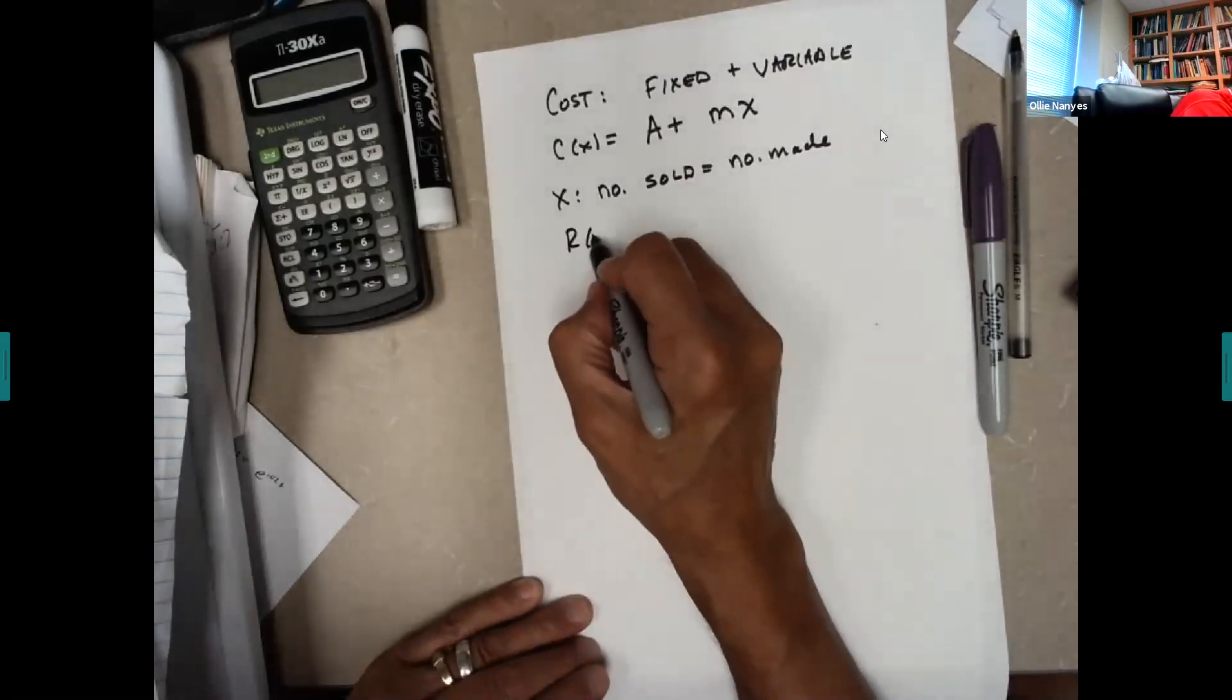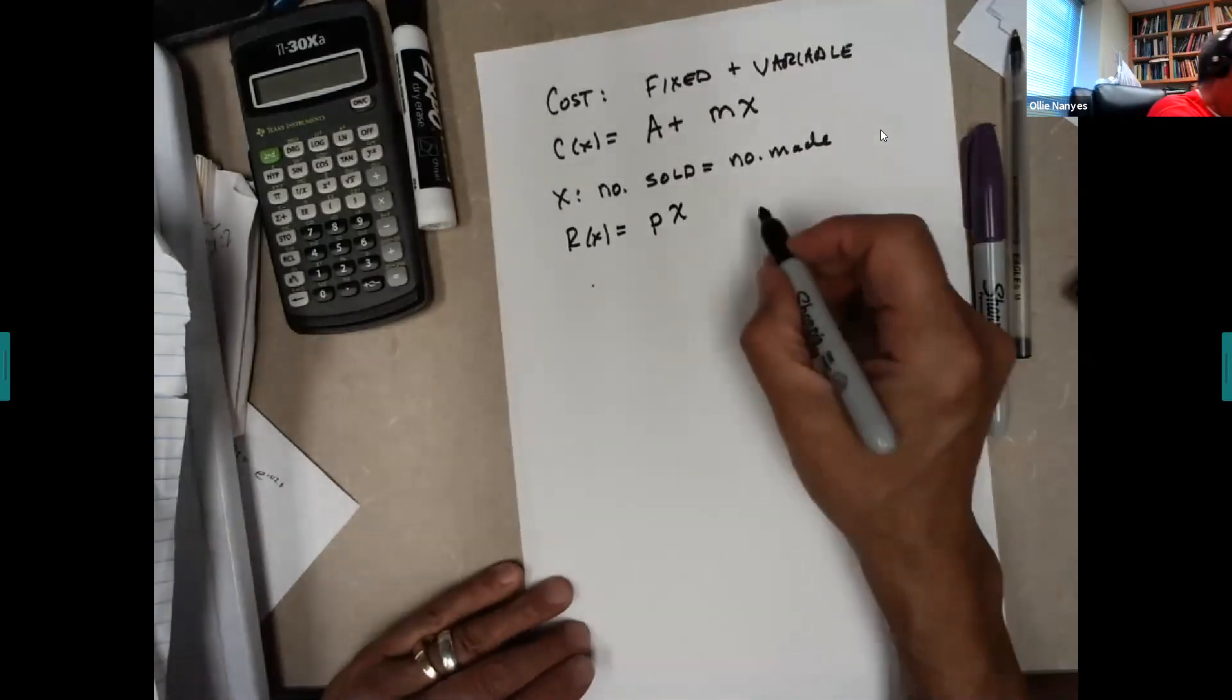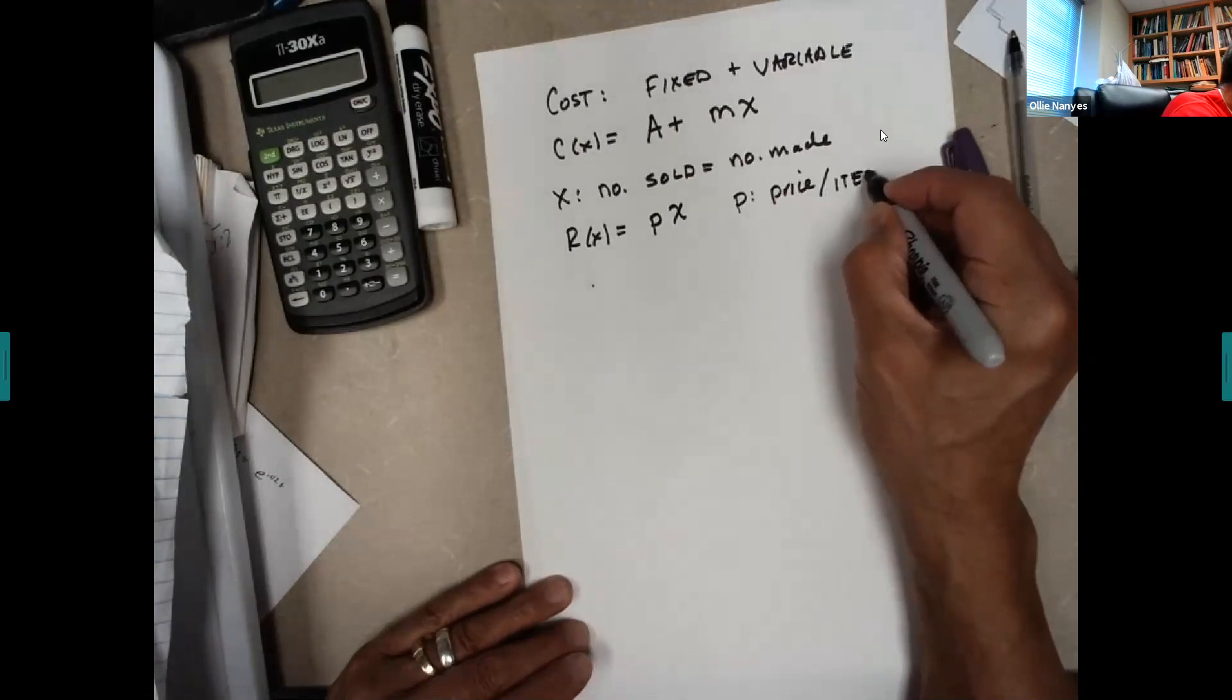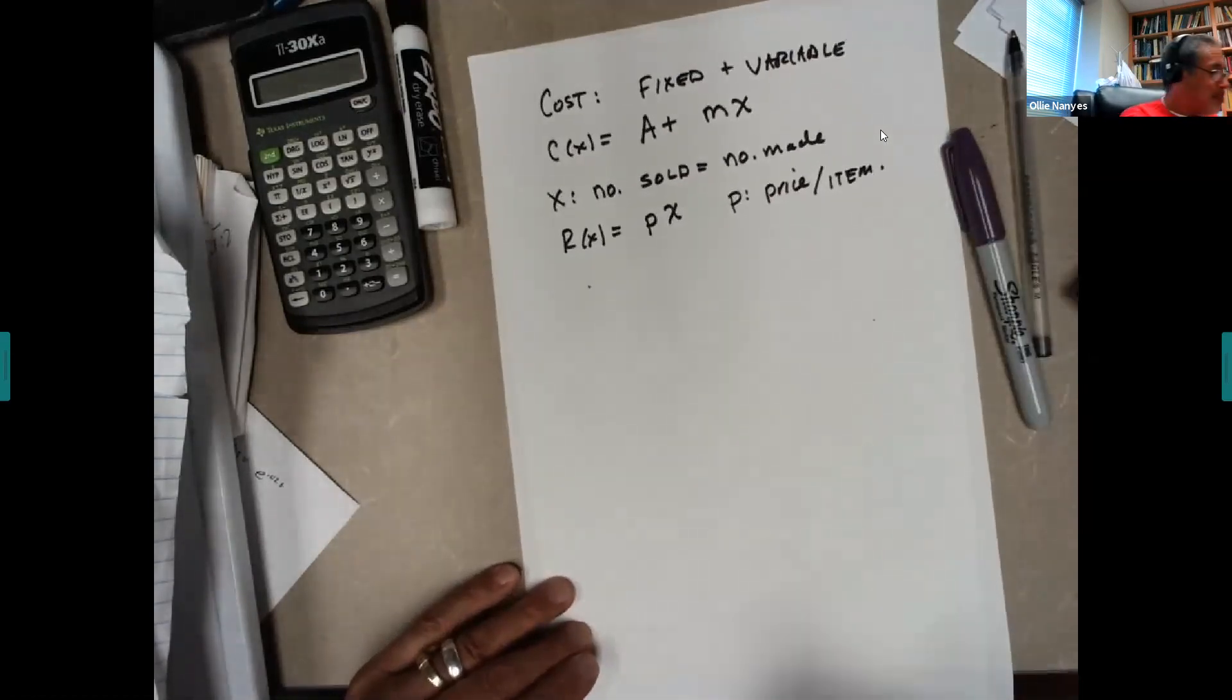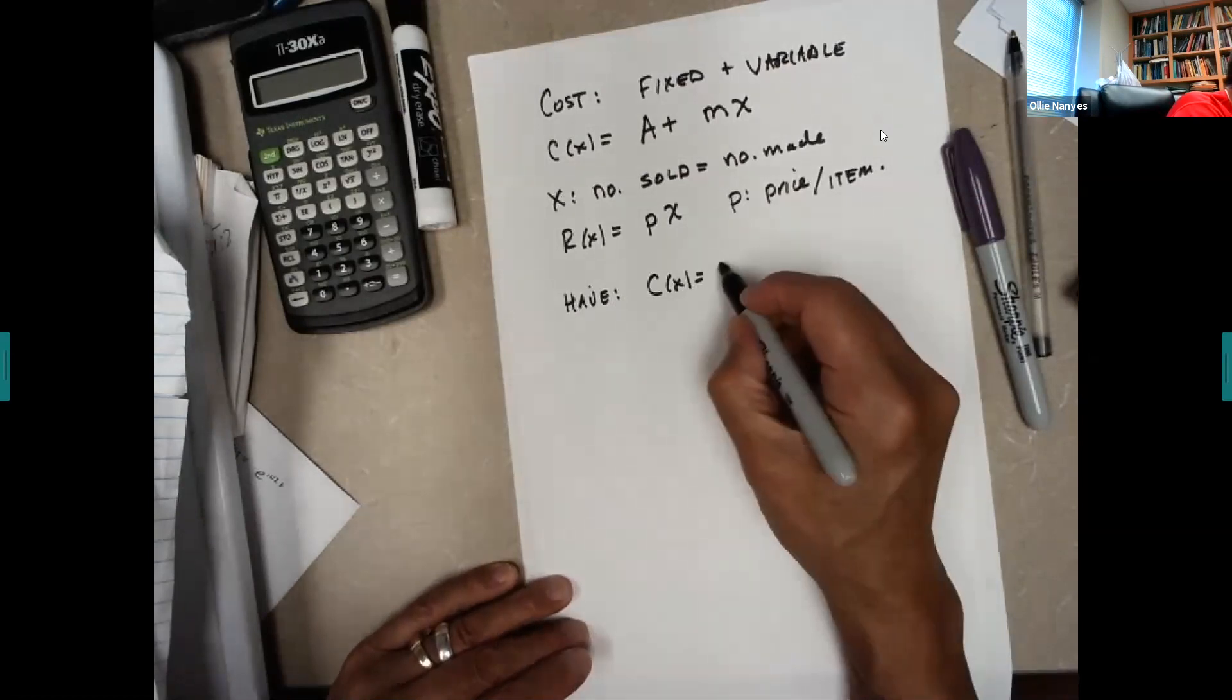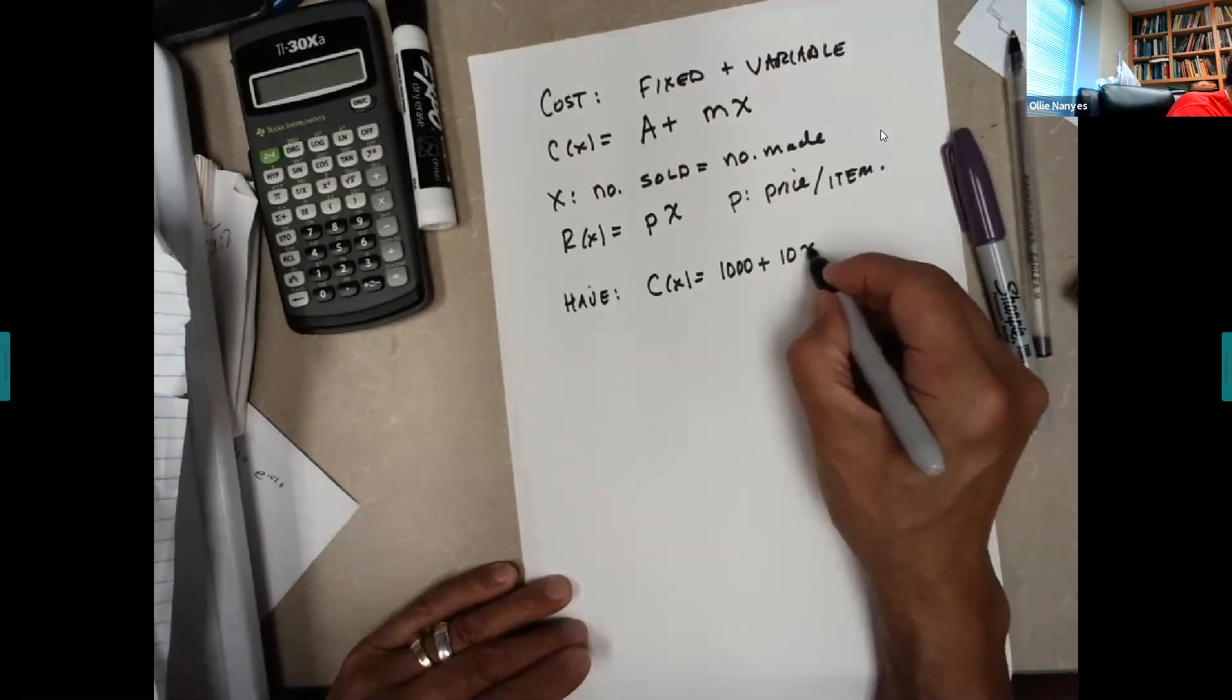The revenue is just going to be the price times X, where P is the price per item. Now let's just look at a hypothetical example. Let's say we have an item whose cost function, let's say it costs $1,000 to start up, and it costs maybe $10 per item to make.